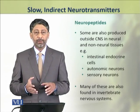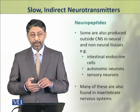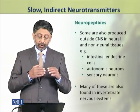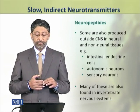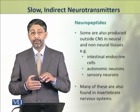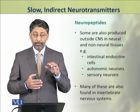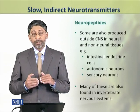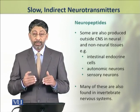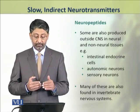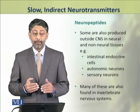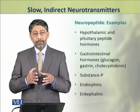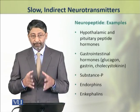For example, intestinal endocrine cells, autonomic neurons, and sensory neurons also produce neuropeptides. Many of these neuropeptides are also found in the nervous systems of invertebrates.